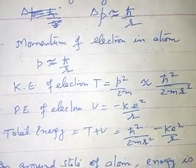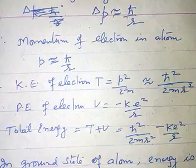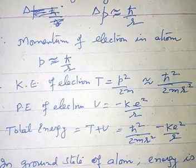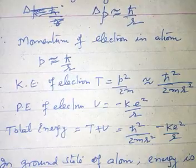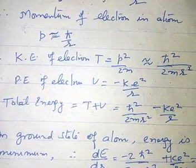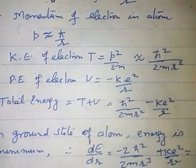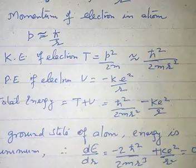Putting the value of p, and potential energy of electron will be v, suppose it is minus k e square upon r. So the total energy will be t plus v which is h cross square upon 2m r square minus k e square upon r.